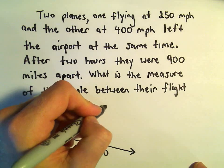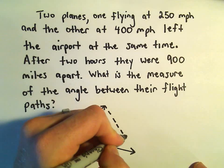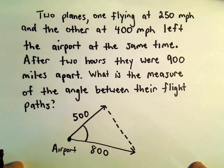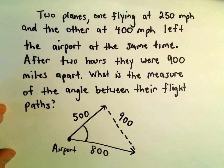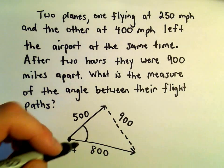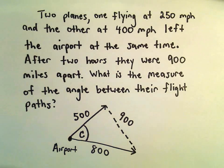And we know the distance between them. The distance between them, we're given that, that's 900 miles. And again, we're just trying to figure out their flight path, so maybe we can call that angle C.